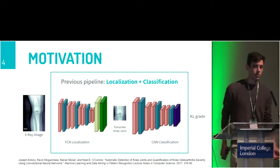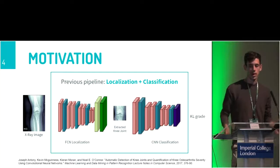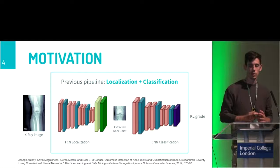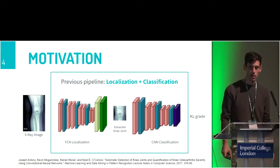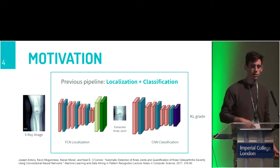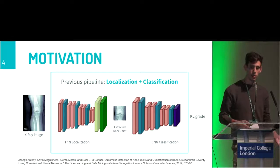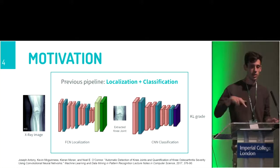Most state-of-the-art methods propose the use of two networks: first to segment and extract the joints, and then classify the severity of these knee joints. This approach requires pre-training of a segmentation network and also manual annotation of the segmentation maps.